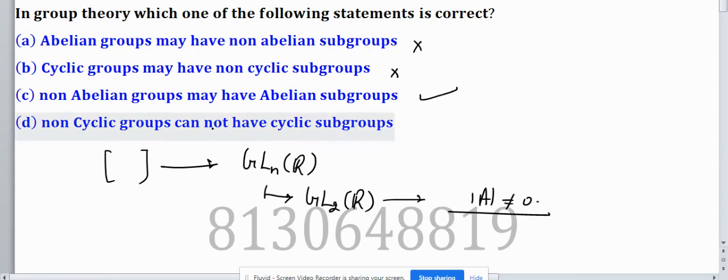Non-cyclic groups cannot have cyclic subgroups. Again, this statement is wrong. Non-cyclic groups can have cyclic subgroups. So only statement (c) is correct.